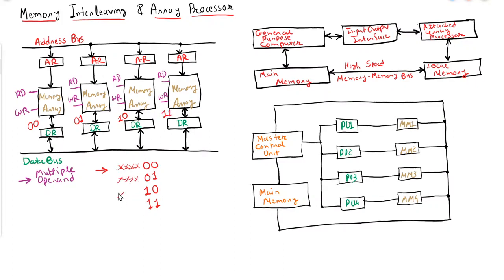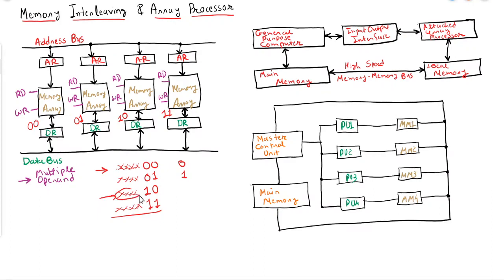The preceding bits can be anything. So if there are four modules the last two bits will be considered. If there are only two modules, the last one bit will be considered — if the last digit is zero it goes to the first module, if one it goes to the second module. Similarly, whenever we are retrieving data we also consider the last two bits. So if you want to retrieve data whose last two bits are 10, it will be retrieved from the third memory module. This is how memory interleaving works.